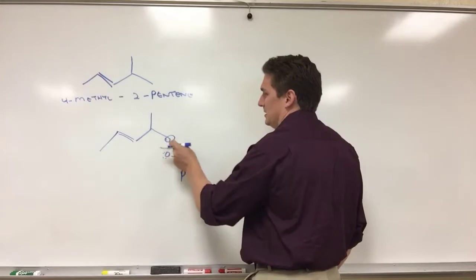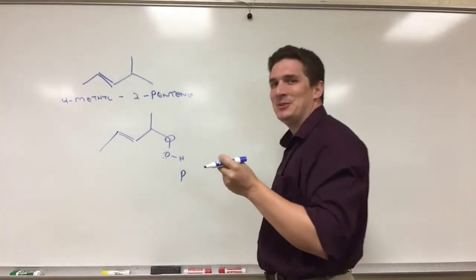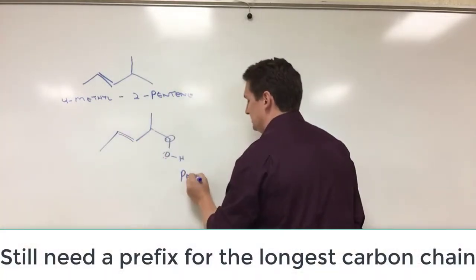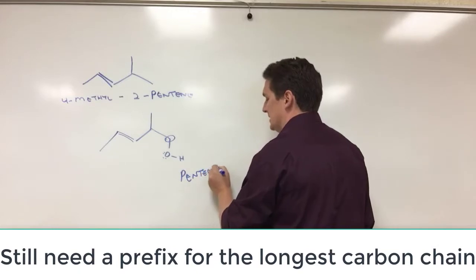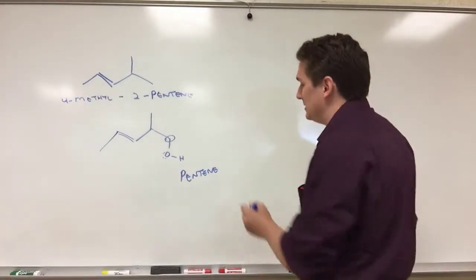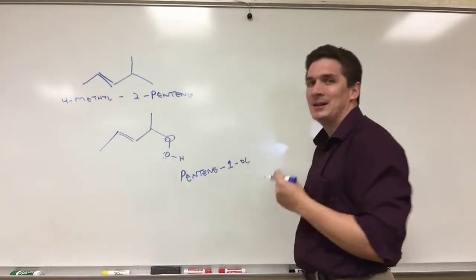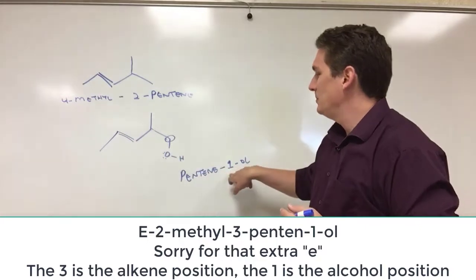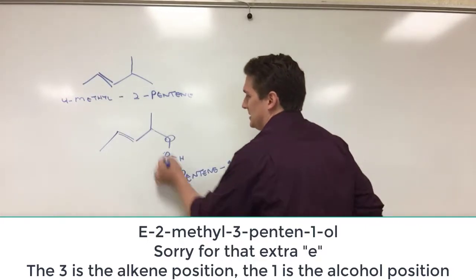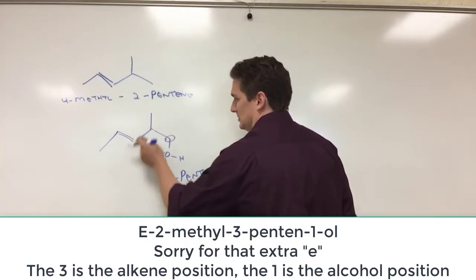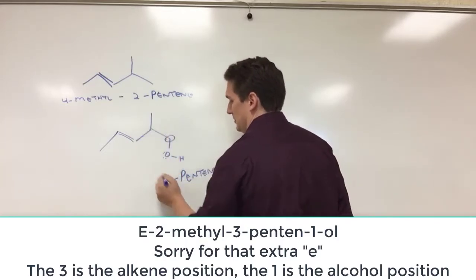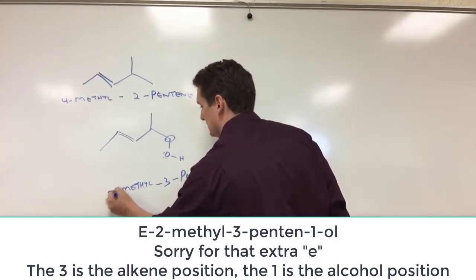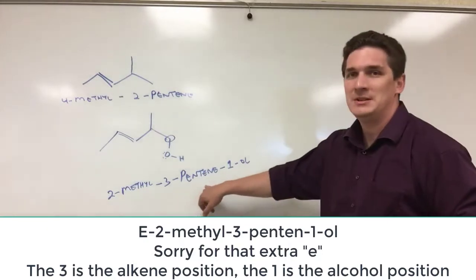So we still have to name it with the hydrocarbon in it. So this is one, two, three, four, five. So pentene to designate that the carbon chain has the double bond in it. It ends up being one O-L. So name it as an alkene, put the position of the alcohol, then put the O-L. Since this is one, this ends up being, let's see here, one, two, three pentene, two-methyl. So 2-methyl-3-pentene-1-ol.